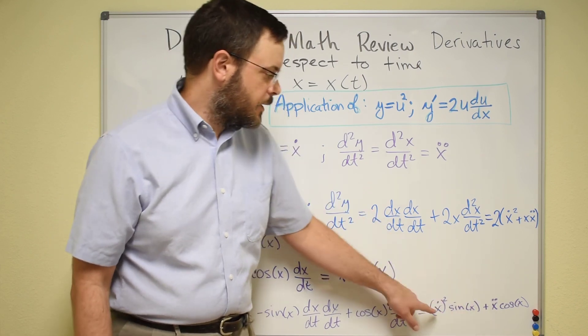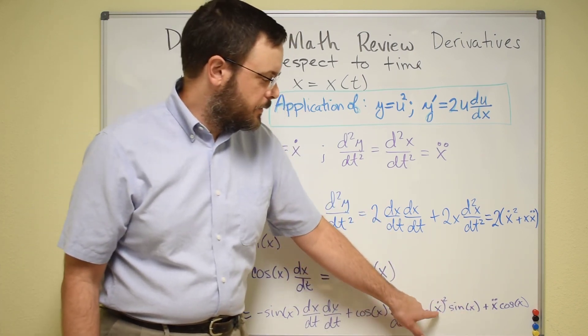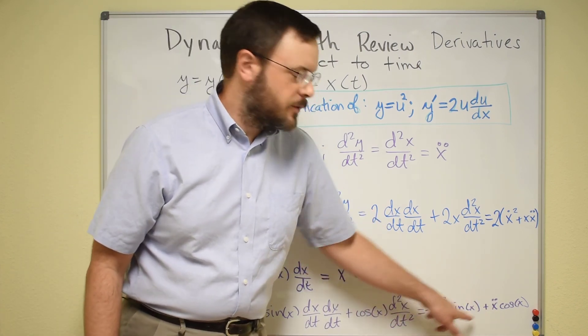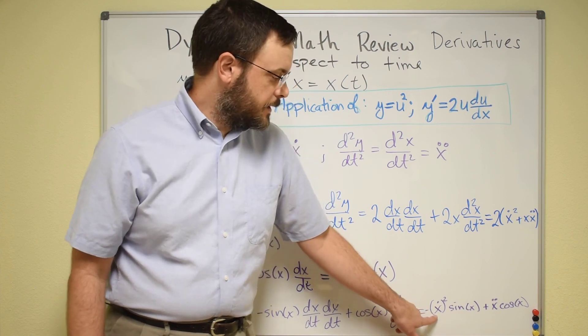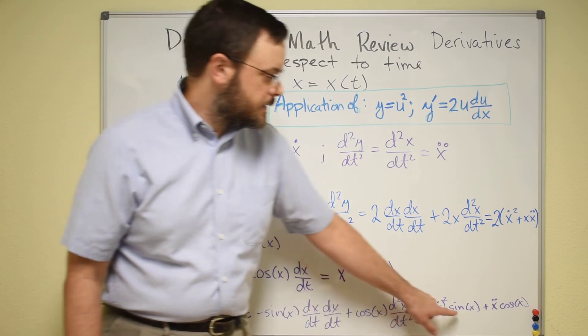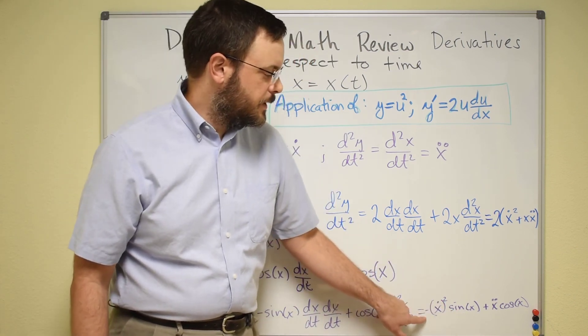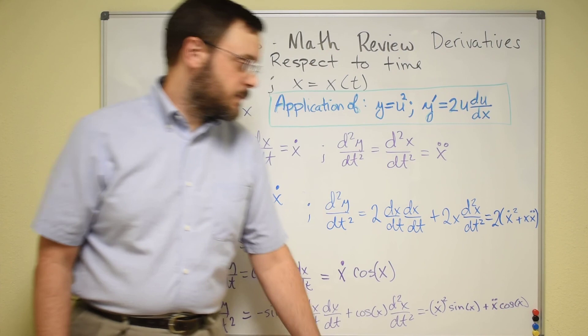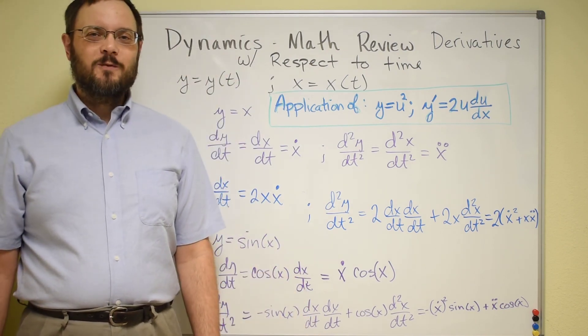And then just writing it in this more compact form and pulling the x and derivative terms out front, we get ẋ squared, because we have 2 dx/dt terms, sine of x with the negative sign in front, plus ẍ times cosine of x. Thanks for watching!